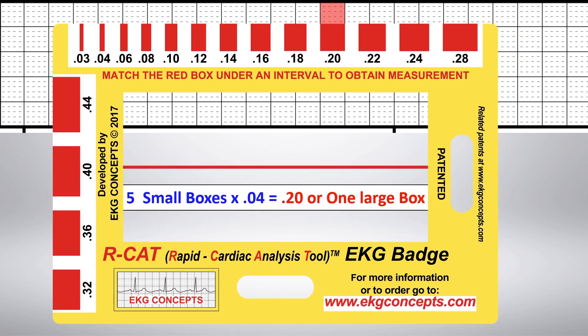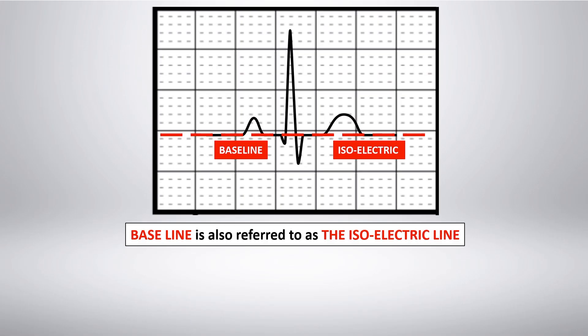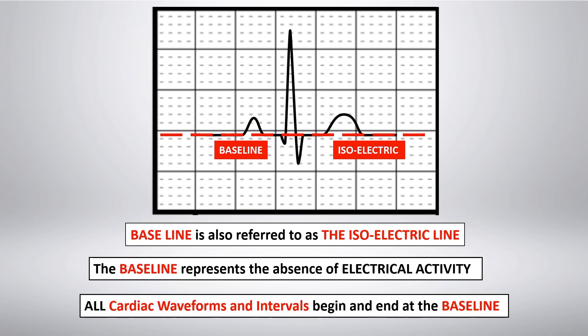In this example, you can see that 5 small boxes equals 1 large box. The baseline is also referred to as the isoelectric line. The baseline represents the absence of electrical activity, and all cardiac waveforms and intervals begin and end at the baseline.